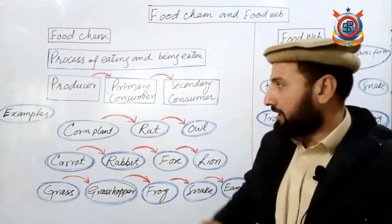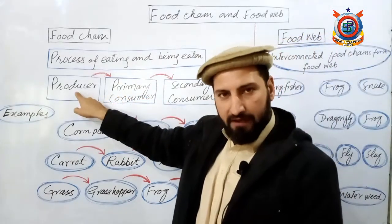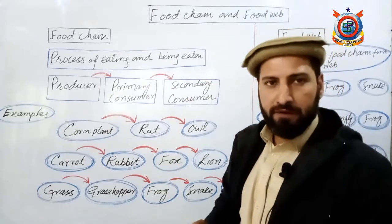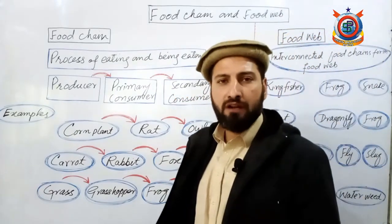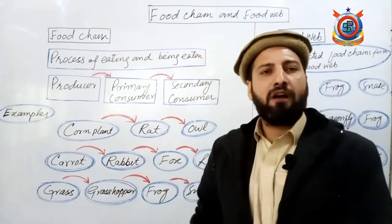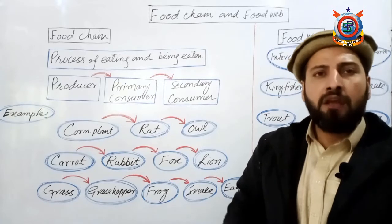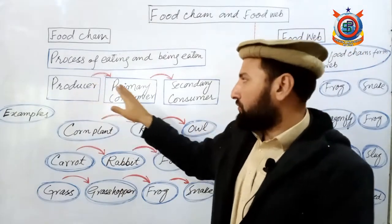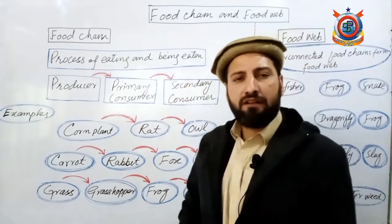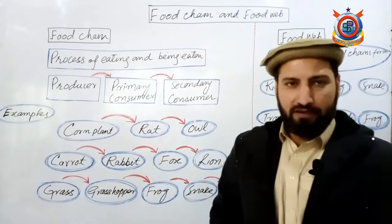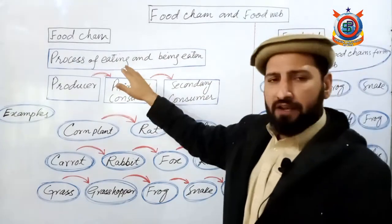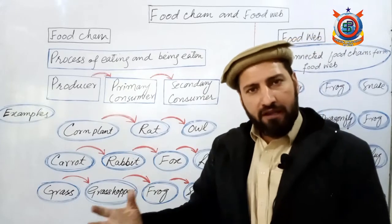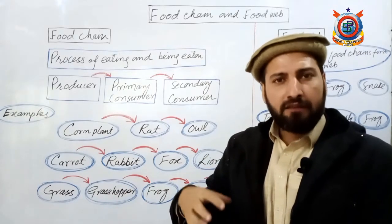The third component is the secondary consumer. Secondary consumers are organisms that cannot take their food directly from plants. They will take their food indirectly through primary consumers - food is produced here, then transferred to the primary consumer, and from primary consumer it transfers to the secondary consumer. And beyond secondary consumer, if there is a tertiary consumer or quaternary consumer, it passes step by step. Every food chain has minimum three trophic levels: producers, primary consumers, and secondary consumers.